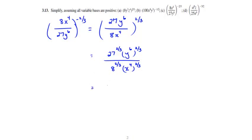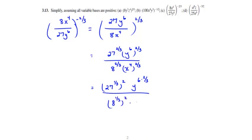27 to the 2/3 is the same as 27 to the 1/3 power, squared. y to the 6th to the 2/3 is y to the 6 times 2/3 — multiply the exponents. In the denominator, the constant term becomes 8 to the 1/3 squared, times x to the 4 times 2/3.